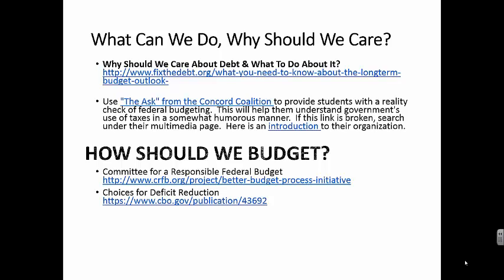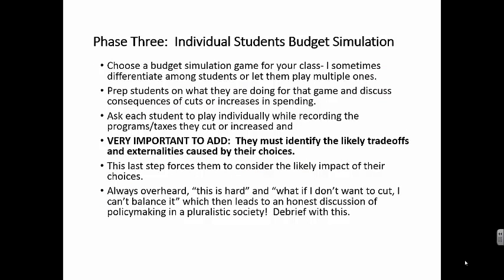I share these four websites with students and discuss solutions on better ways to budget. The Committee for a Responsible Federal Budget suggests better ways for Congress to operate — in other words, a better decision-making process. Near the end of this module, I list all budget simulations currently available. Each election cycle, some new ones are released and others retired. Choose one for your class; I sometimes have a class do multiple ones, differentiating based on student ability.